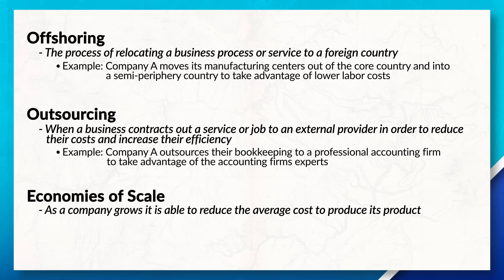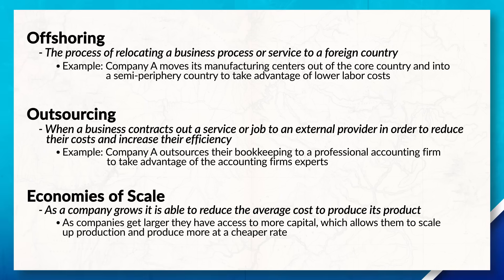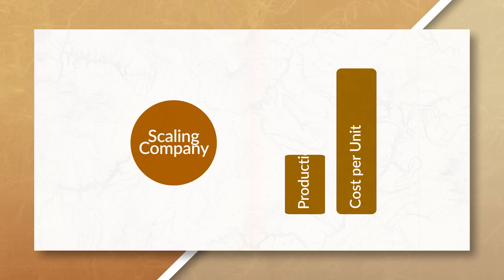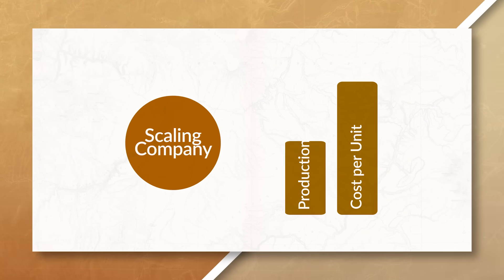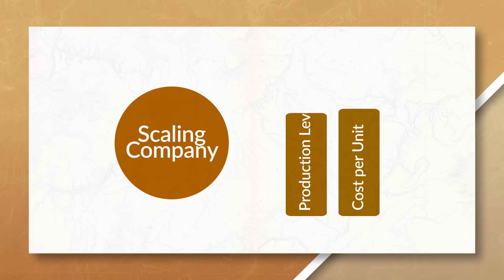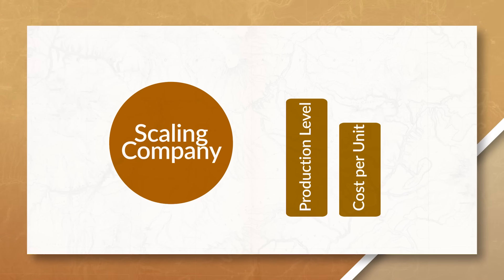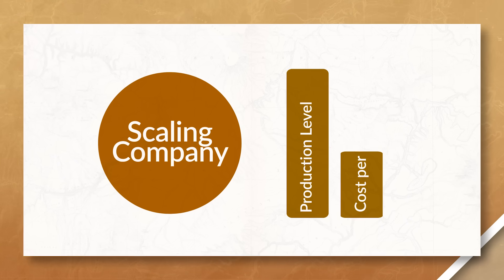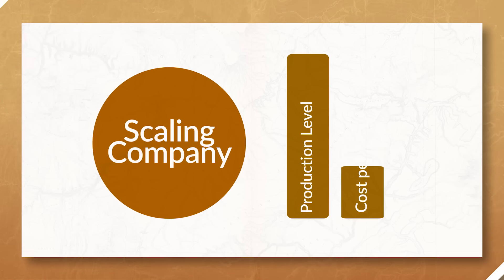In addition to outsourcing and offshoring, some companies will also adjust their production based on their size and the economies of scale that they can achieve. Companies that are able to achieve economies of scale see a decrease in their cost per unit of production. As companies get larger, they can purchase better machines and systems, and have more access to capital, which allows them to scale up faster, producing more of a product at a cheaper rate.